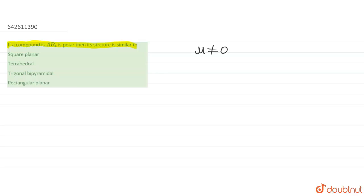In the first option they are talking about the square planar geometry. So if we draw the square planar geometry of AB4, it will look somewhat like this — B, B, B, B — so it is a square planar geometry. All four atoms attached to A are in the same plane.